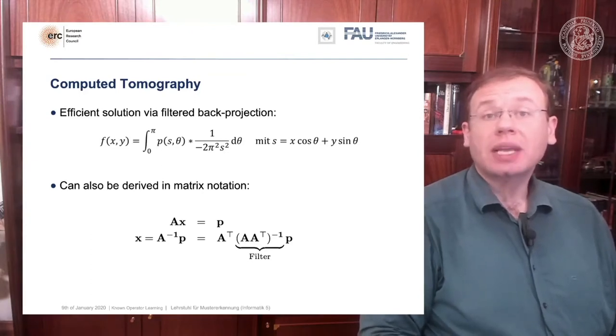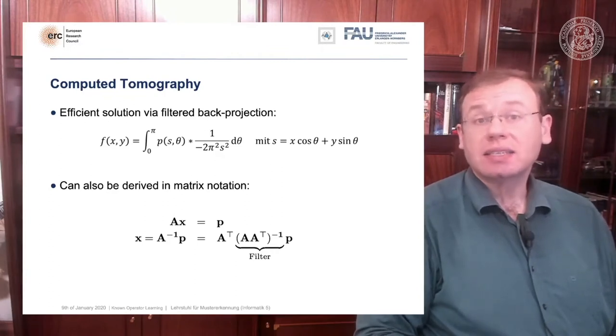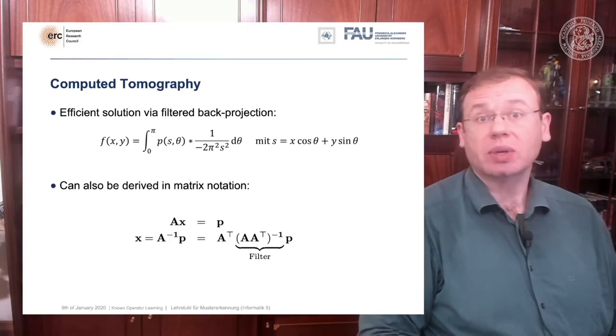You could argue that the inverse that you see here in A is actually the filter. For this particular problem, we know that the inverse of A A transpose will form a convolution. This is nice because we know how to implement convolutions into deep networks, right? Matrix multiplications.